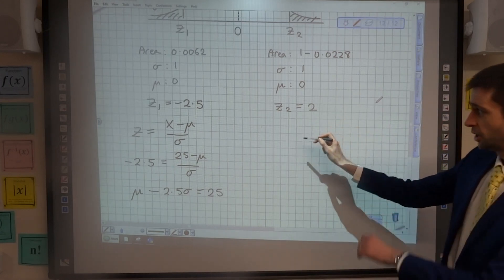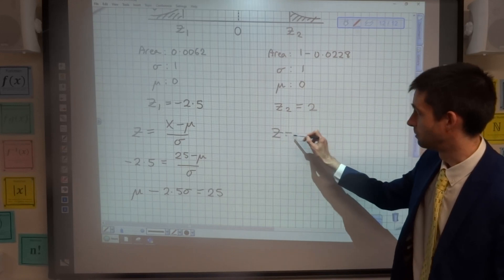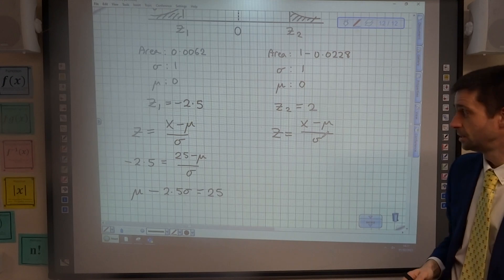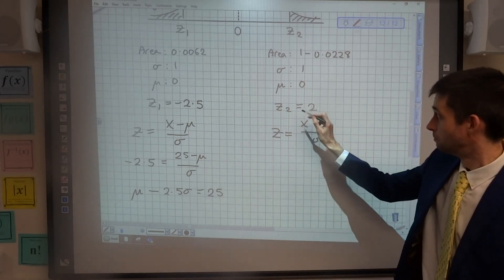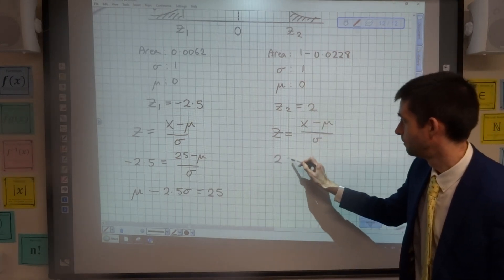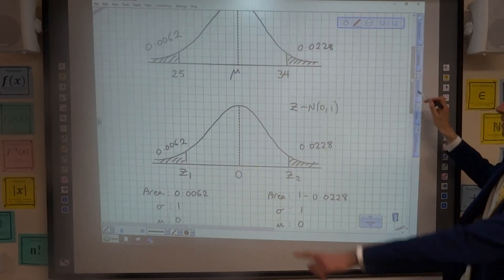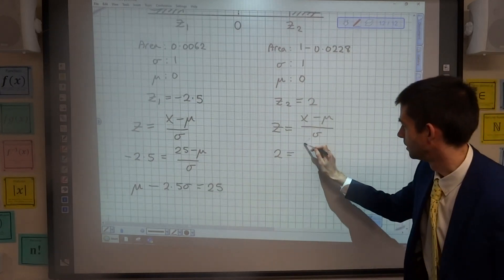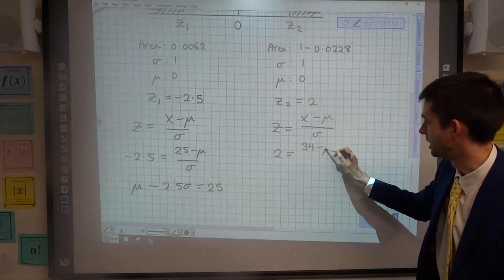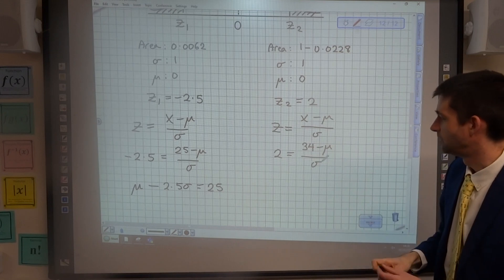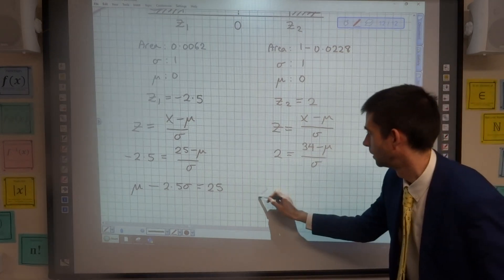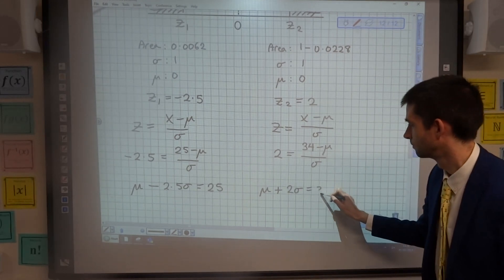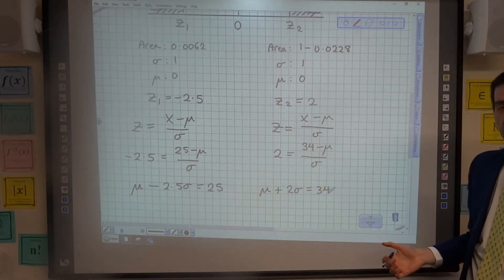Next, I'm going to go to z2. Again, I'm going to use my standardizing formula: z equals x minus mean over the standard deviation. Z2 is 2. The x value that's associated with is the 34. So 34 minus mean over standard deviation, and if I rearrange that one, I'm going to get mu plus 2 sigma is equal to 34.